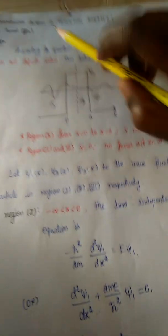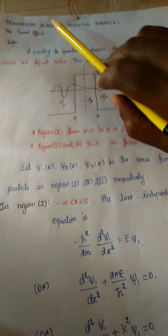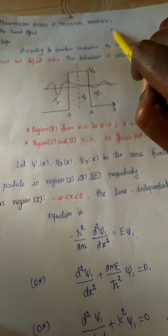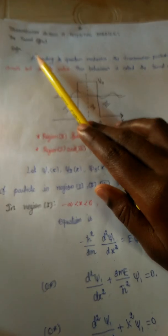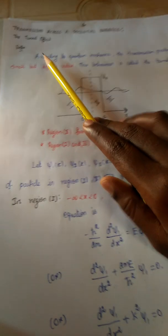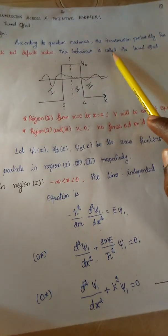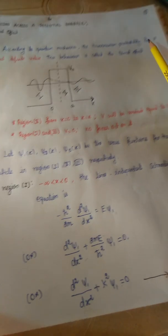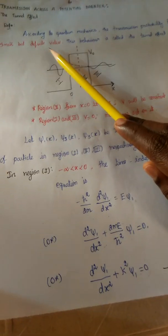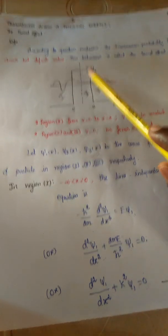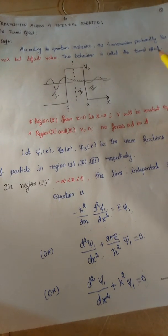Namaskaram students. Today we are discussing the transmission across a potential barrier for the tunnel effect. According to quantum mechanics, the transmission probability has a small but definite value. This behavior is called the tunnel effect.